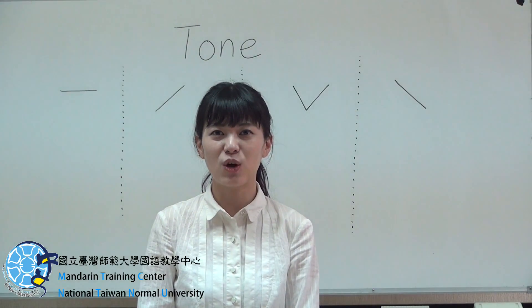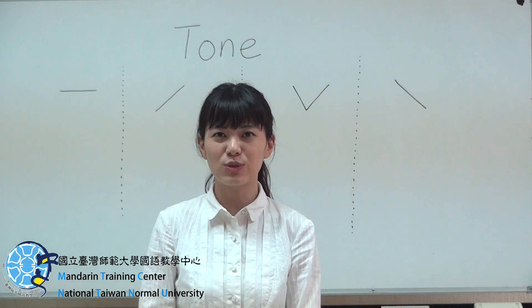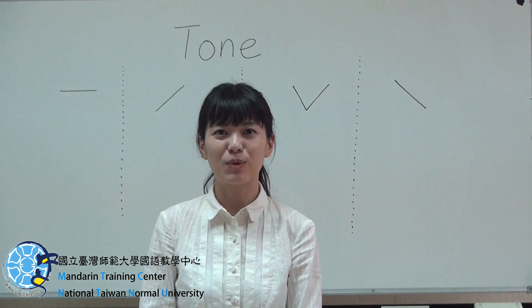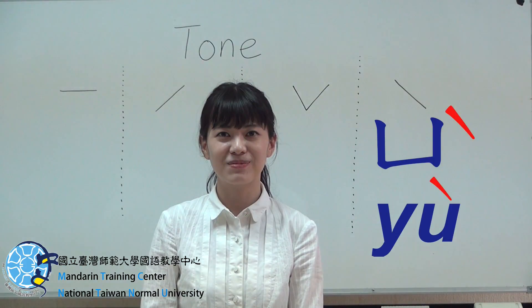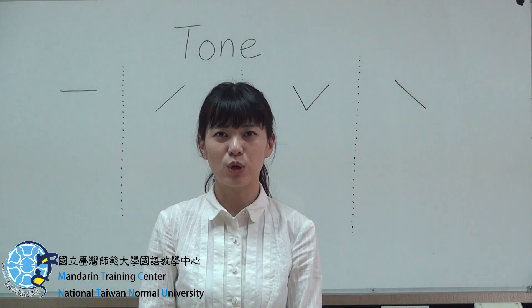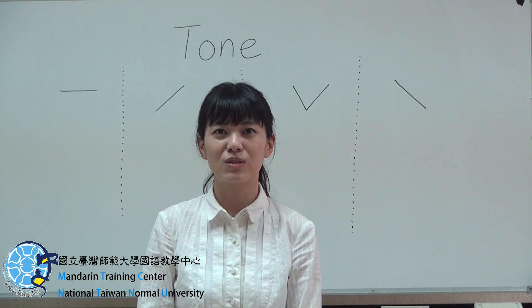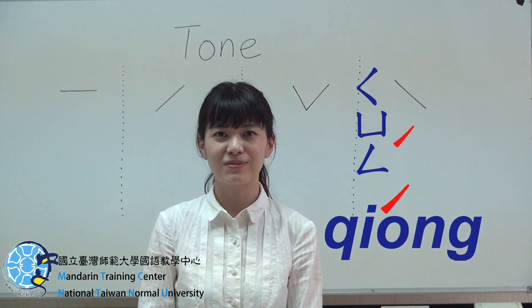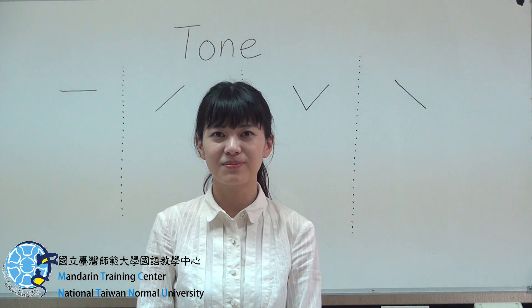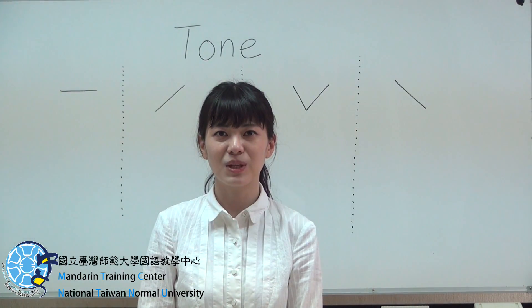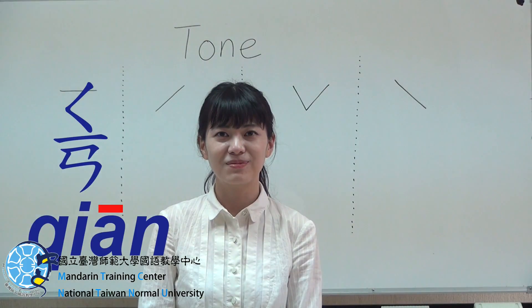Now we're doing a tone listening test. I'll say a Chinese word and you tell me what tone it is. Number one: yú, yú. What tone is it? Good. Number two: chóng, chóng. What tone is it? Good. Number three: qián, qián. What tone is it? Good.